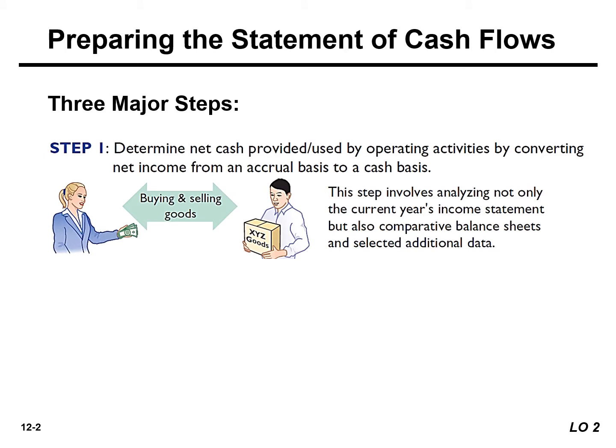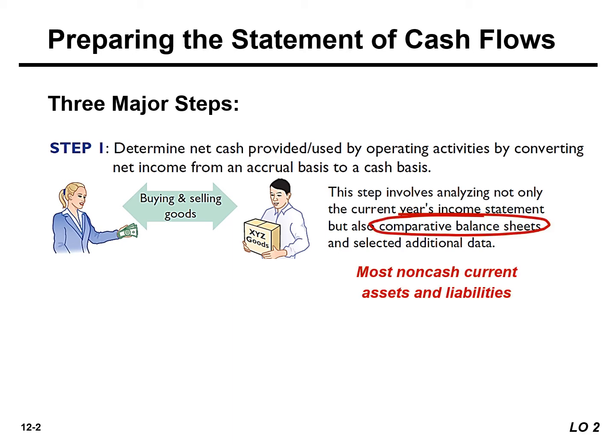Preparing the statement of cash flows involves three major steps. I'd like to talk about each step at a very high level, and then we'll take a look at a business with actual numbers and prepare the statement of cash flows. The first step is we're going to convert our net income from an accrual basis to a cash basis. We will need to analyze the current year income statement, as well as a comparative balance sheet — more specifically, we will need to look at non-cash current assets and liabilities, such as accounts receivable, inventory, accounts payable, and wages payable.